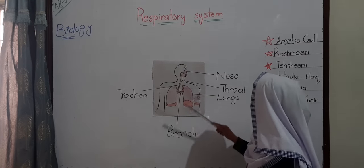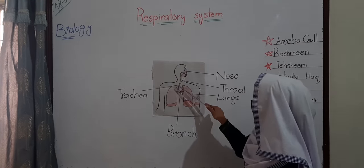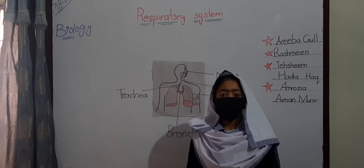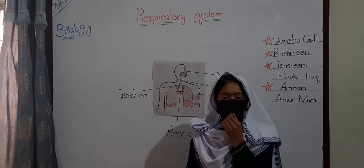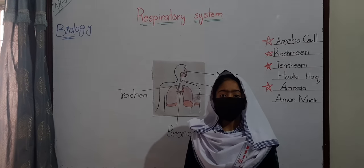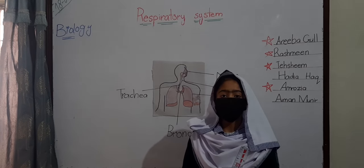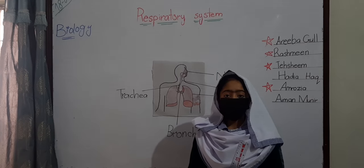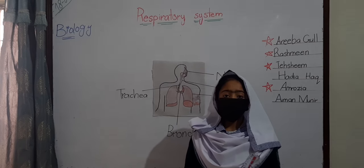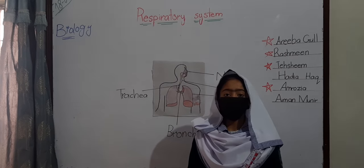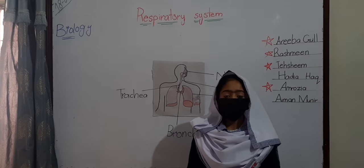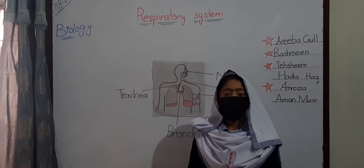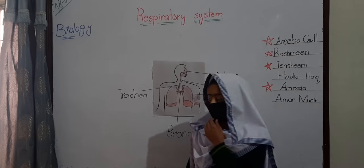Trachea. The second name of trachea is windpipe. In the trachea, hair and mucus are also present to filter the air. In the trachea, there are rings made of cartilage. These rings open when air comes and close when food comes.